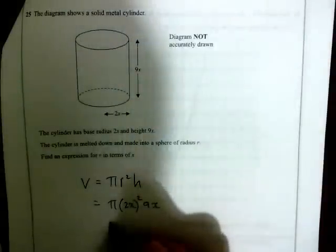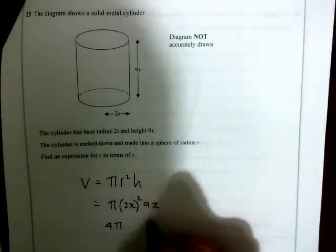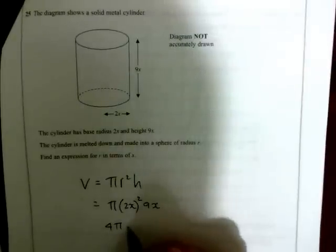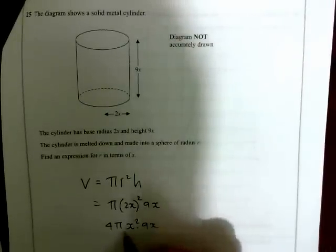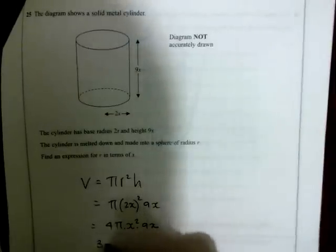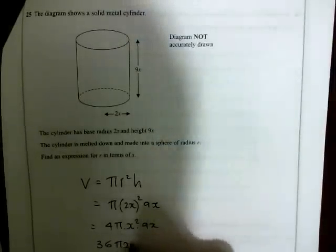So we get 4π, and we've got a 9 as well. I'll show you it in two steps. Bringing the 9 and 4 together gives 36πx cubed.